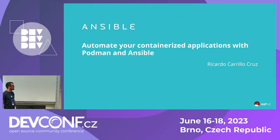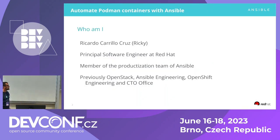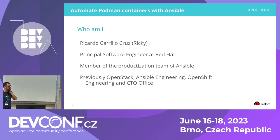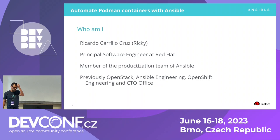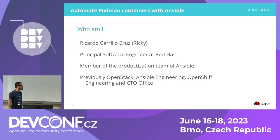My name is Ricardo Carrillo Cruz, although everybody calls me Ricky. I'm a principal software engineer at Red Hat; I've been there for almost seven years. I'm a member of the productization team at Ansible. We are responsible for building and delivering the Ansible products, including the installers, operators, and other related components. Previously I was involved in the OpenStack project, then joined Red Hat with Ansible, and also worked at OpenShift Engineering and OCDO before coming back to Ansible.